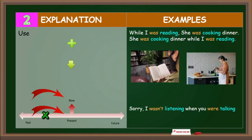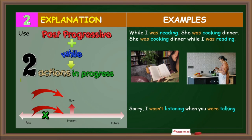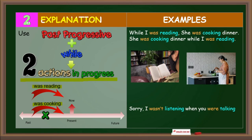Explanation number two: Use the past progressive with 'while' to talk about two actions in progress at the same time in the past. Use the past progressive in both clauses. For example: was reading, was cooking — two actions that started before a specific time in the past. While I was reading, she was cooking dinner.